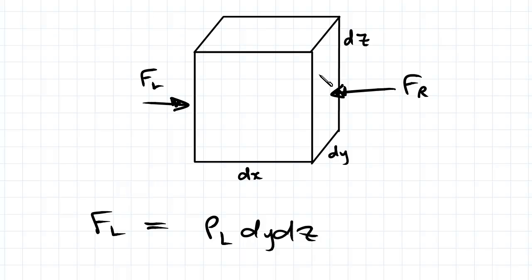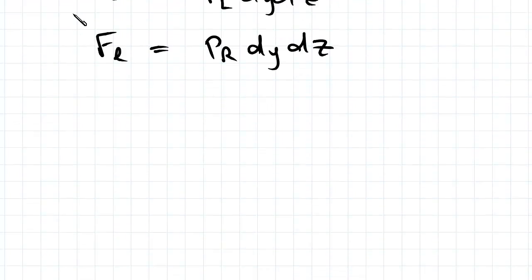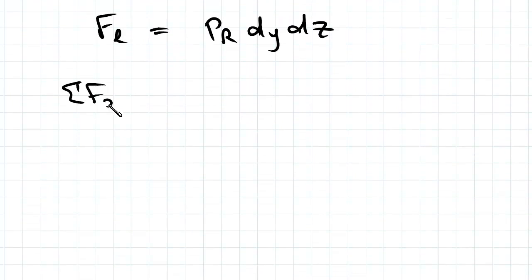And doing the same for the right hand side, FR is the pressure on the right hand side multiplied by dy dz. If we take the sum of moments in the x direction and apply Newton's second law of motion, then we get sum of moments in the x direction equal to FL minus FR, which equals m ax according to Newton's second law of motion.